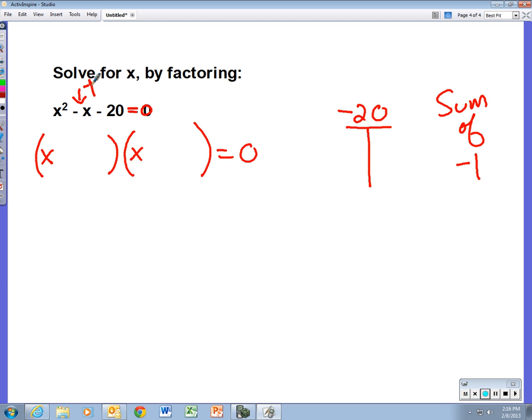Think of your factors for negative 20. Well, we've got a positive 4 and a negative 5. Four times negative 5 is negative 20, and if I add those together, I get negative 1. So those are my factors. We've got plus 4 and minus 5. However, we have to go one more step: solve for x.